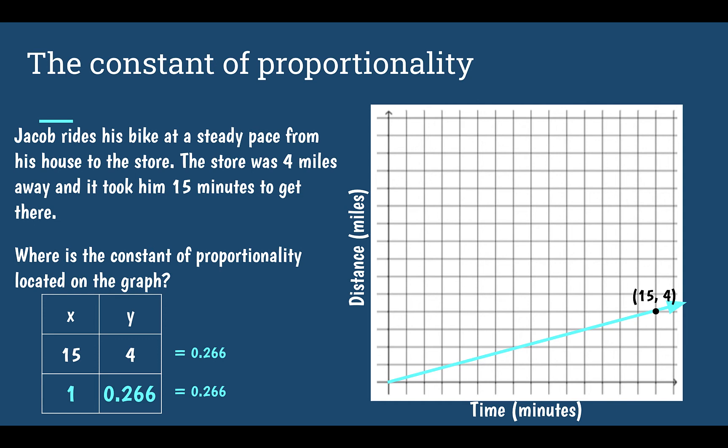So your constant of proportionality on your graph is going to be at the point 1 and then whatever it is on your graph. In this case, it's 0.266. So our constant of proportionality is the y coordinate when x equals 1.